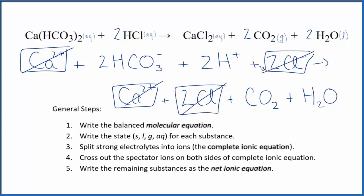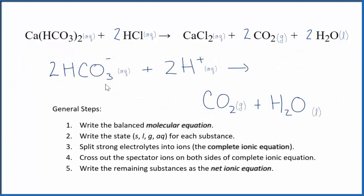What's left is the net ionic equation for Ca(HCO3)2 plus HCl. Let me clean this up and write the states. We'll have our net ionic equation. This is the balanced net ionic equation for calcium bicarbonate plus hydrochloric acid.